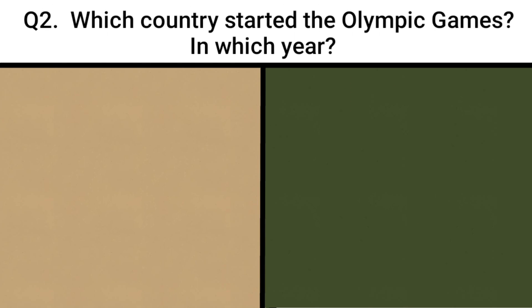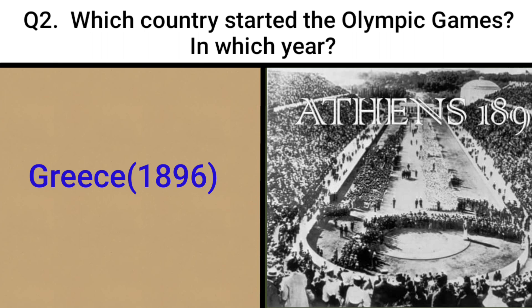Which country started the Olympic Games and in which year? Greece in 1896.